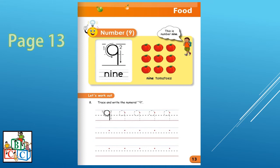So as you can see, it is stepwise about the number 9. Let us spell the number word 9. N-I-N-E nine. Now, let us count how many tomatoes there are.